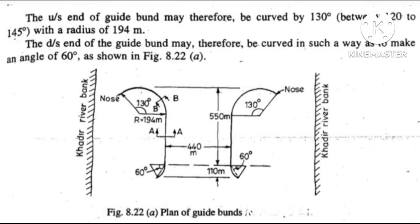The upstream end of the guideband may therefore be curved by 130 to 155 degrees with a radius of 194 meters. The downstream end of the guideband may be curved in such a way as to make an angle of 30 degrees as shown in the figure. This is the plan of the guideband.